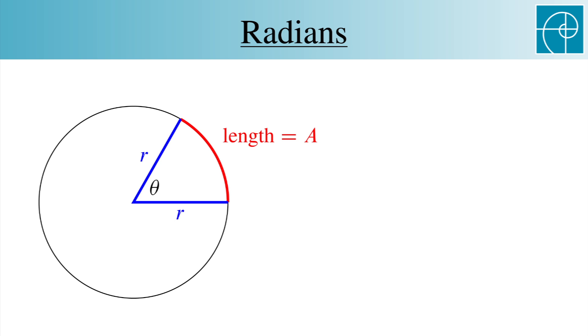As the size of the circle changes, in other words, as r changes, A changes too. But if we divide by r, we get a ratio that's independent of the size of the circle. Therefore, the radian measure of theta is defined as the ratio of A over r.